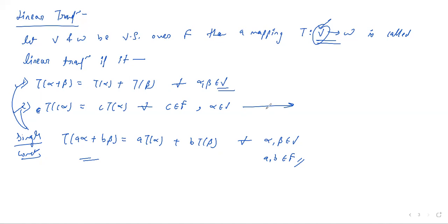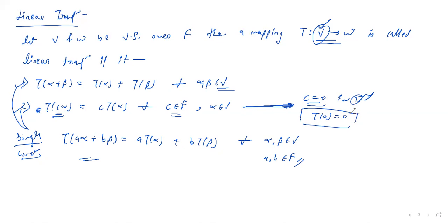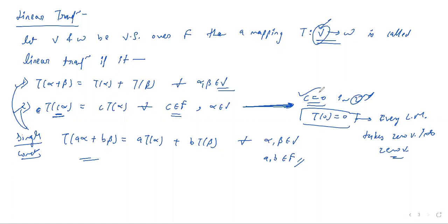Now, if we look at the second condition and put C = 0, we get T(0) = 0. This means every linear mapping takes the zero vector into the zero vector. This is very important when checking whether a mapping is a linear transformation — we first check whether T(0) = 0.